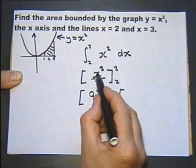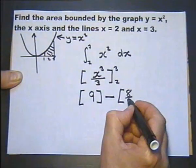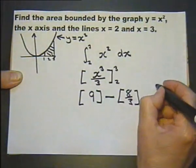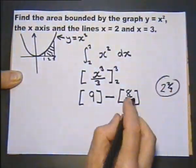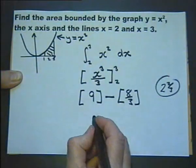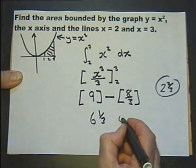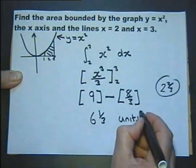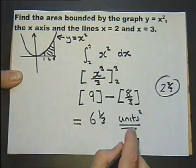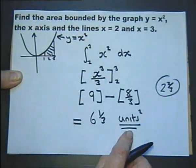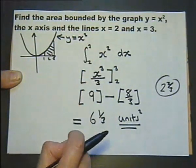In other words, x cubed is 2 cubed which is 8 over 3. Now appreciating that 8 over 3 is 2 and 2 thirds, we're talking about 9 minus 2 and 2 thirds which is 6 and 1 third. As it's an area we could write square units at the end. We don't know what the units are but we don't usually bother to do that. So we found the area by doing what we call a definite integral.